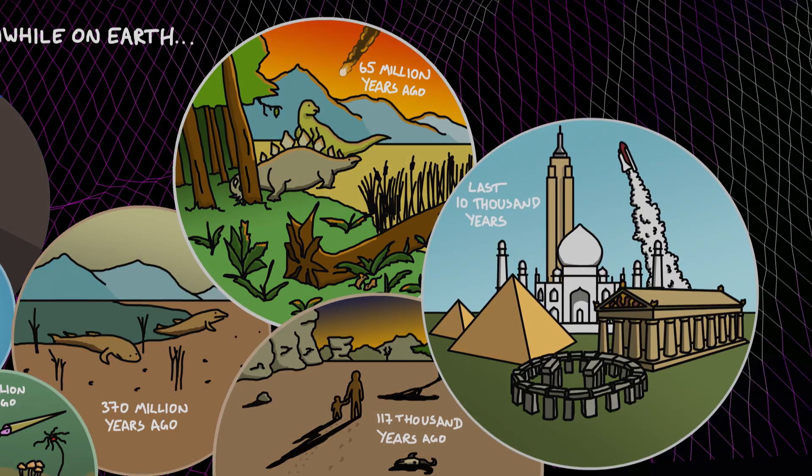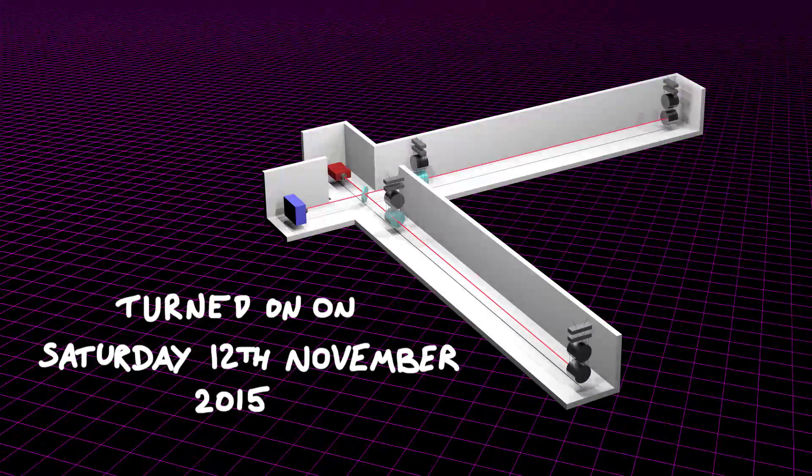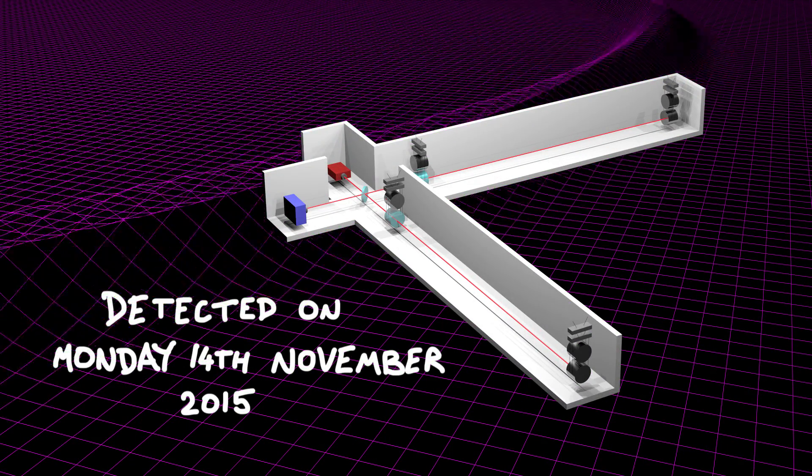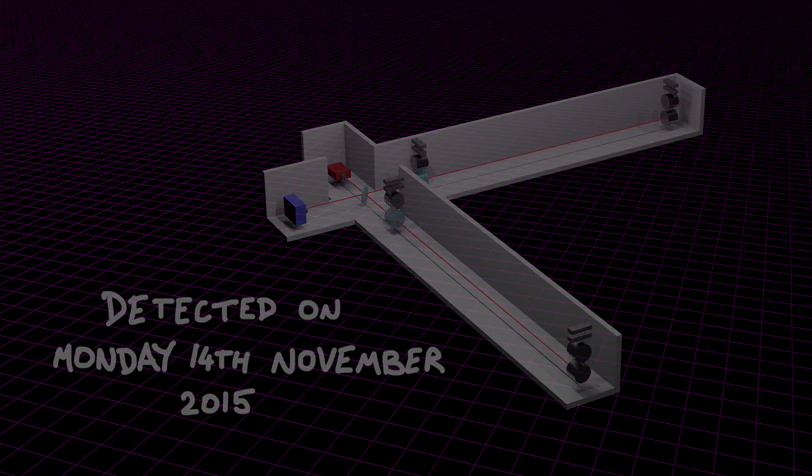Right up until Saturday, the 12th of November, 2015, when the scientists at LIGO turned it on to begin their initial tests. A mere two days later and the gravitational waves flew past us and the first direct detection of gravitational waves on Earth was made.